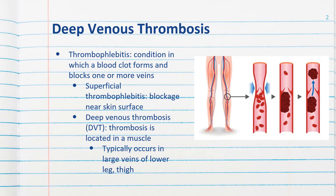Phlebitis, or sometimes called thrombophlebitis, is a condition in which a blood clot forms and blocks one or more veins. Clots typically form in the legs but can form in other areas of the body including the arms and neck in rare instances. When the blockage occurs near the skin surface, it's known as superficial thrombophlebitis. When it occurs deep in a muscle, it is known as deep venous thrombosis or DVT. DVT typically occurs in the large veins of the lower leg and thigh.